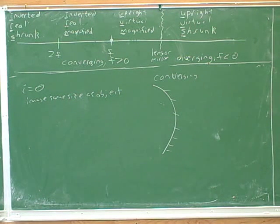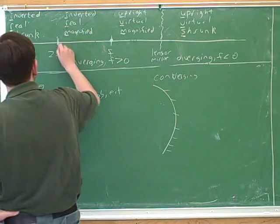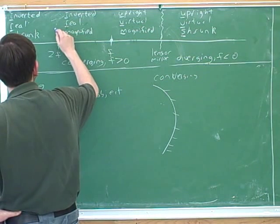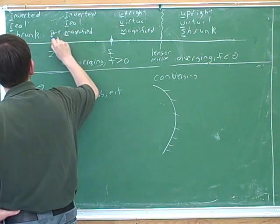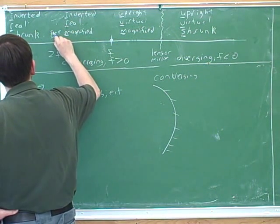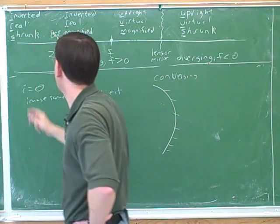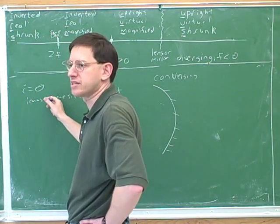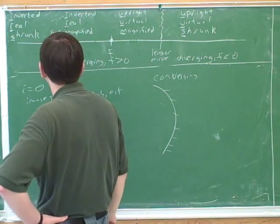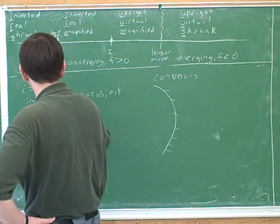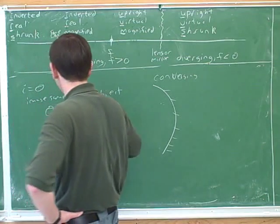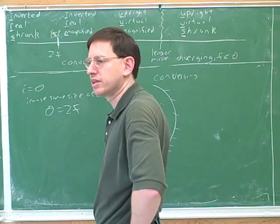What's the one point for a converging device when we have the same size as the image? Wouldn't that be this point over here? We've seen that when the object is at twice the focal point, this is when the image is the same size as the object. So we know right off the bat that the object must be at twice the focal point.